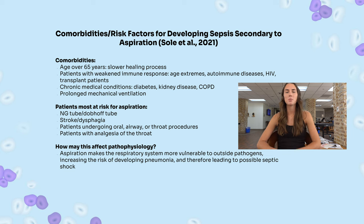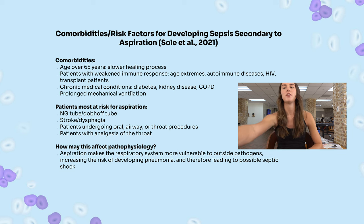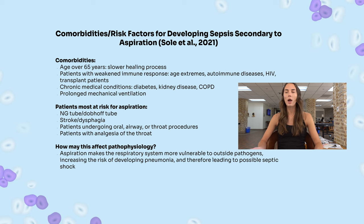Let's talk about some comorbidities and risk factors for developing sepsis secondary to aspiration. Risk factors include patients over 65 years, which contributes to a slower healing process, and patients with weakened immune systems — such as elderly or infants, those with autoimmune diseases, HIV, or transplant patients. Chronic medical conditions such as diabetes, kidney disease, COPD, and prolonged mechanical ventilation also contribute. Patients most at risk for aspiration include those with NG tubes or Dobhoff tubes — especially if nurses aren't checking for gastric residual before each feeding — patients with stroke or dysphagia, and patients undergoing oral airway or throat procedures or those with analgesia to the throat.